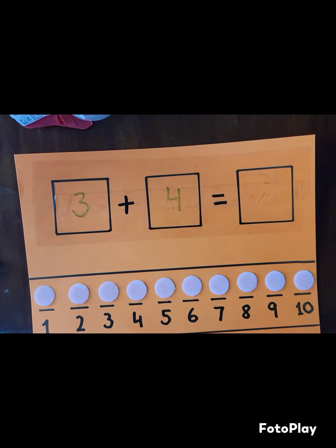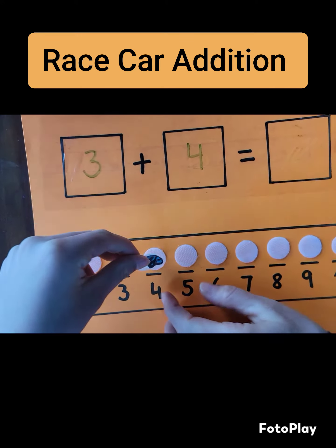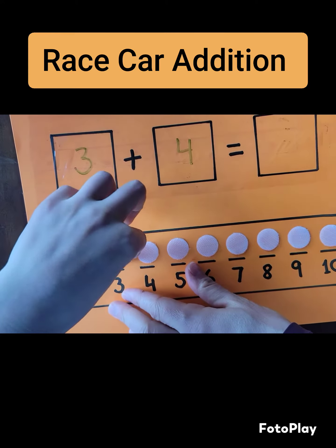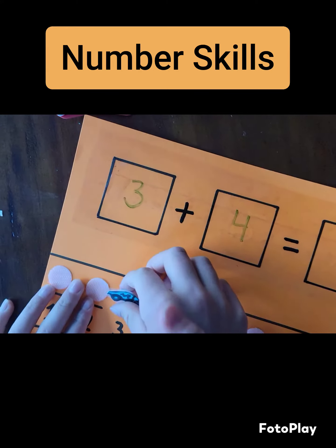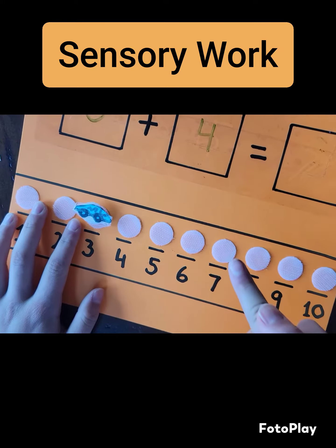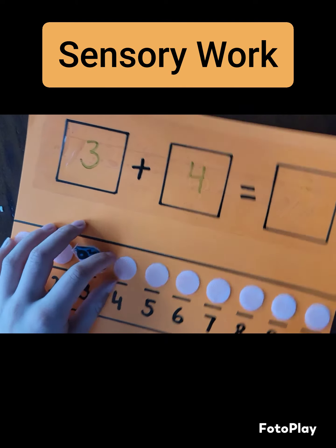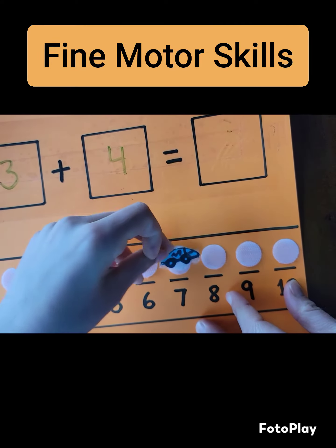This time we have three plus four, so put your little race car on number three. Now we have to do plus four, so count four with your finger: one, two, three, four. Three plus four equals seven.